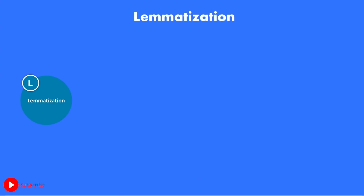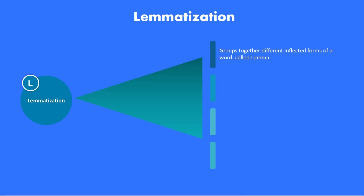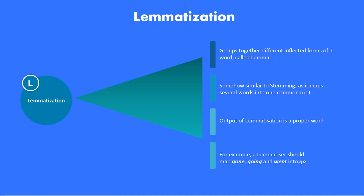Lemmatization, on the other hand, takes into consideration the morphological analysis of the word. To do so, it is necessary to have a detailed dictionary which the algorithm can look through to link the form back to its original root word, also known as the lemma. Lemmatization groups together different inflected forms of a word and is similar to stemming in that it maps several words to one common root, but the major difference is that the output of lemmatization is a proper word. For example, a lemmatizer should map 'gone,' 'going,' and 'went' all into 'go,' which would not be the output for stemming.